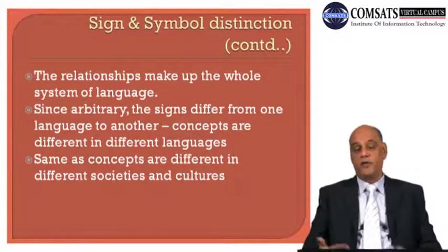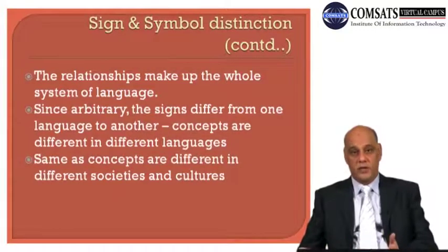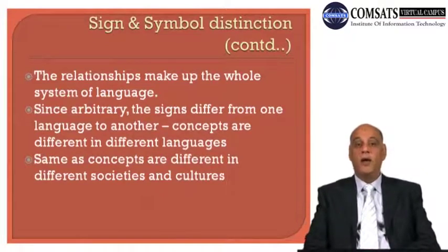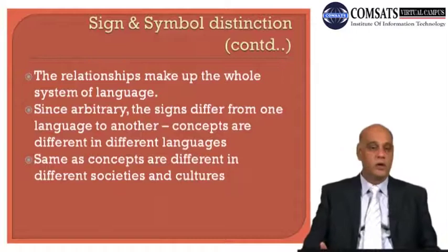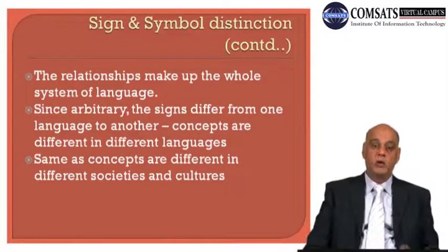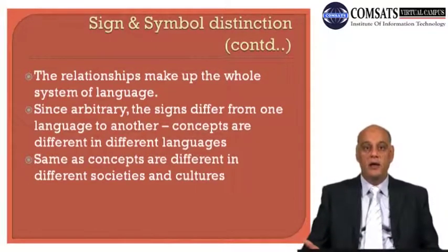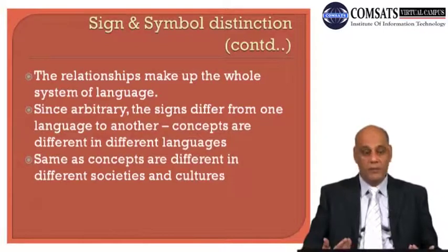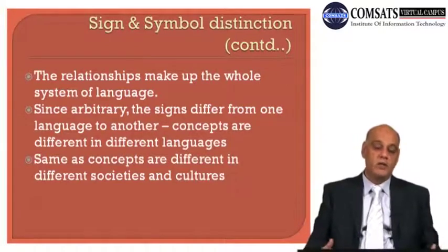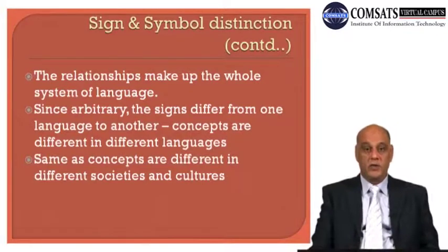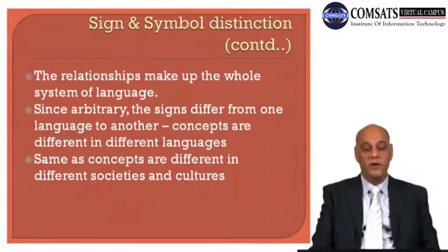Concepts are different in different languages, just as concepts are different in different societies and cultures. Since signs are based on concepts, when concepts are different you have different words and different signs. In every society you have different words for objects — a different word for tree, for table — in French, Arabic, Persian, Urdu, you have different words for the same objects.